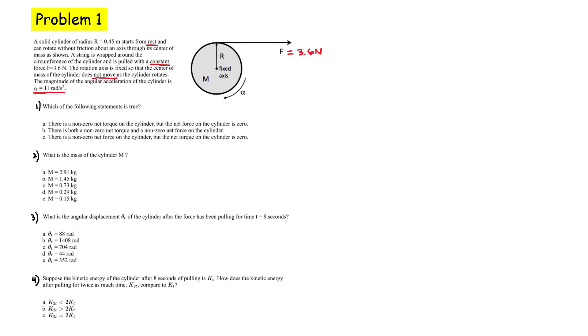Let's look at the first question here. Which of the following statements is true? There is a non-zero net torque on the cylinder, but the net force on the cylinder is zero. Look at B. There's both a non-zero net torque and a non-zero net force. And then C, there's a non-zero net force on the cylinder, but the net torque of the cylinder is zero.